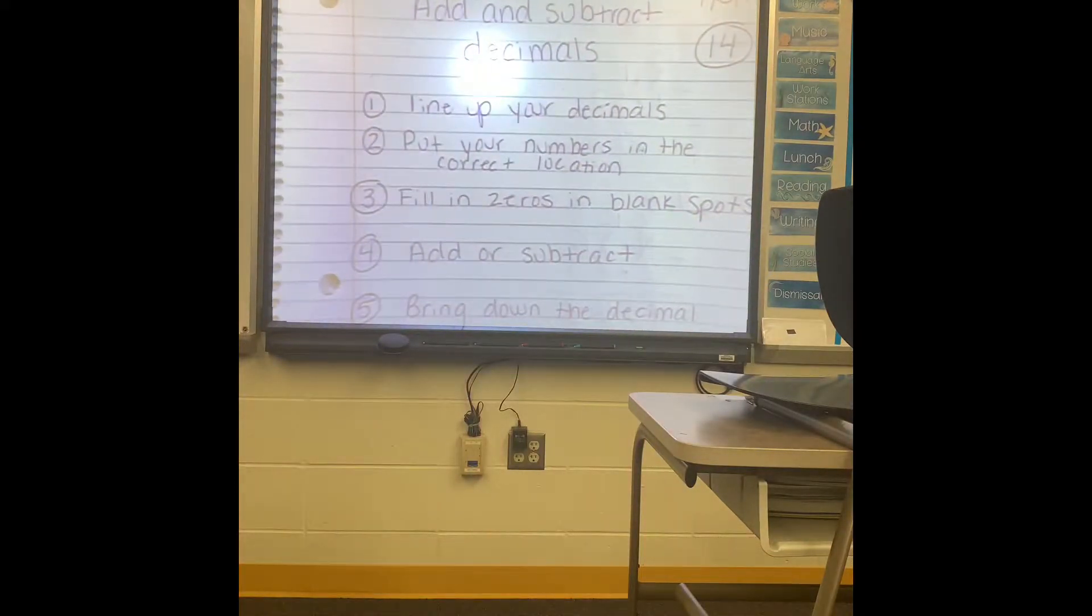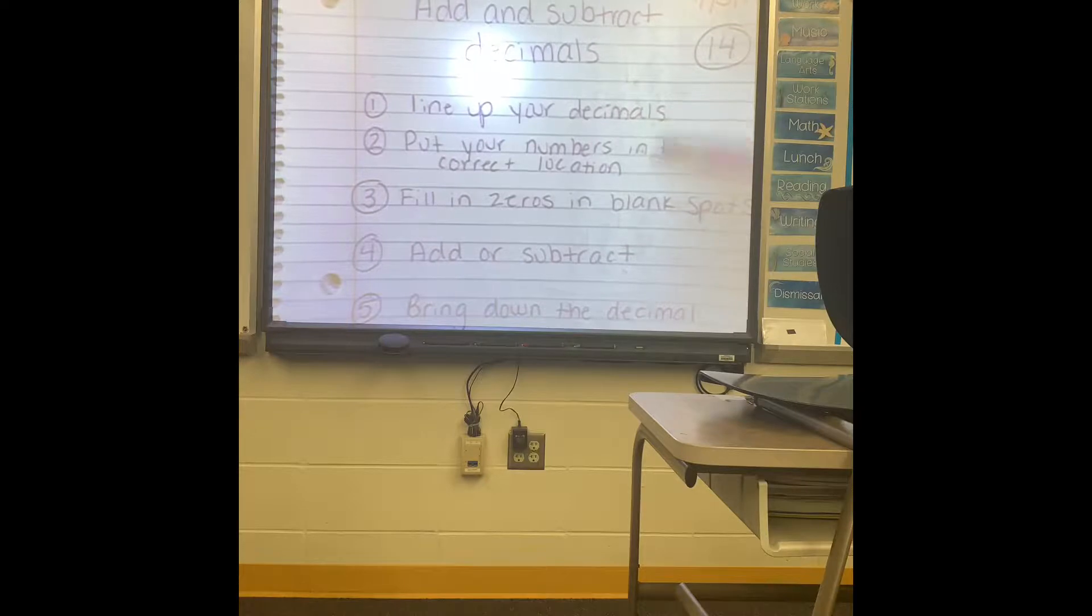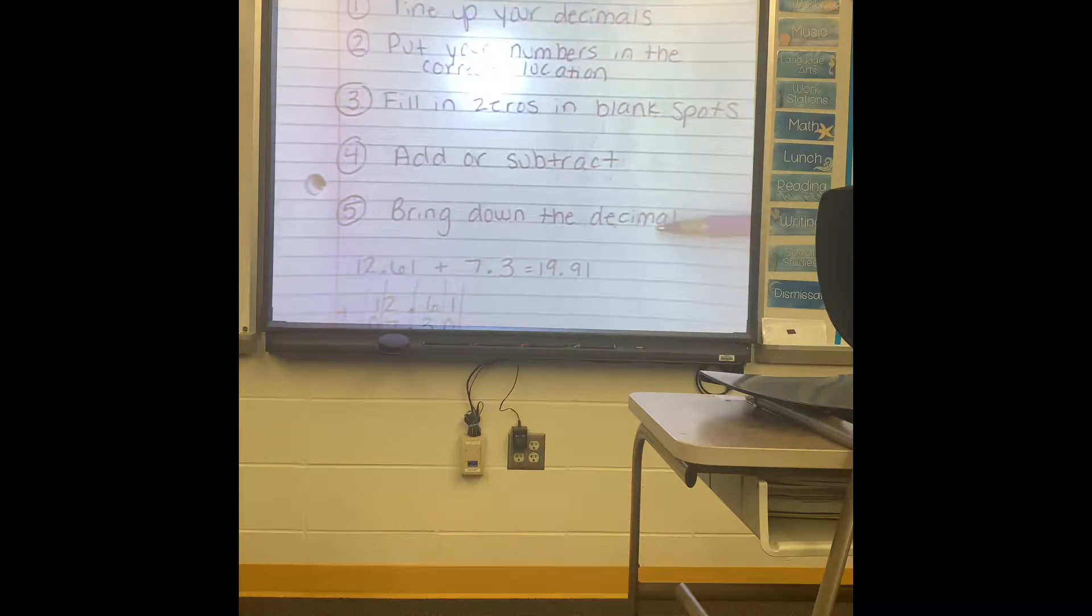And our steps are: the very first thing is line up the decimals. The biggest problem that I have found, especially with students after school, is that they were not lining up the decimals first. Then you need to put your numbers in the correct location. Those are the two biggest problems. Then fill in the zeros in any blanks, add or subtract, and then bring down the decimal.